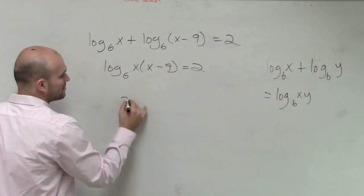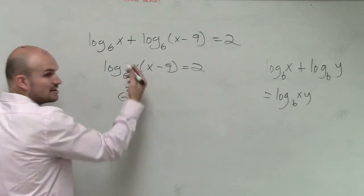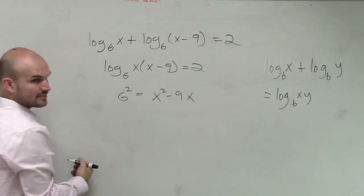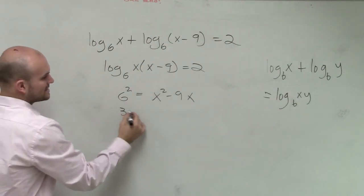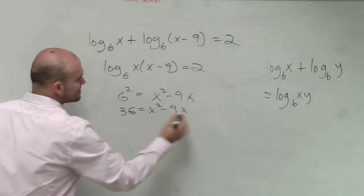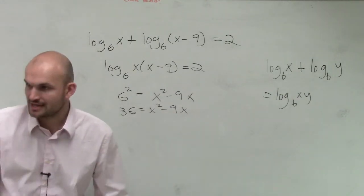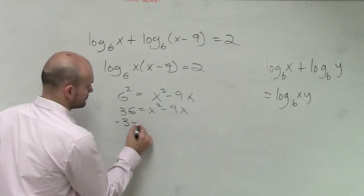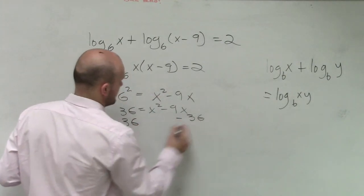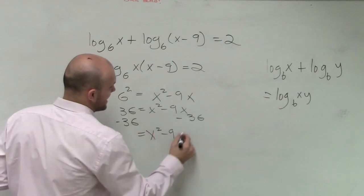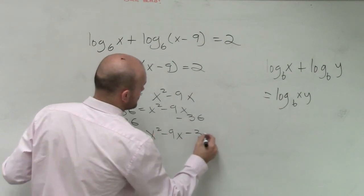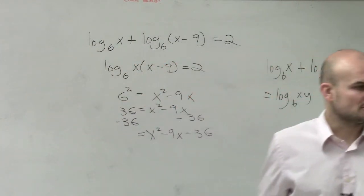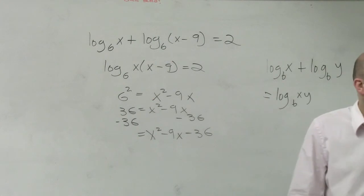Rewriting in exponential form: 6 squared equals, distributing through, x squared minus 9x. Then I get 36 equals x squared minus 9x. Then we go back to — now how do you solve? You set it equal to 0. So we get x squared minus 9x minus 36 equals 0. Now we say: what two numbers multiply to give me negative 36 but add to give me negative 9?